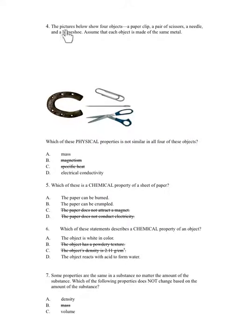Number 4. The picture below shows 4 objects. A paper clip, a pair of scissors, a needle, and a horseshoe. Assume that each object is made of the same metal. Which of these physical properties is not similar in all four of these objects? A. Mass. B. Magnetism. C. Specific heat. D. Electrical conductivity.